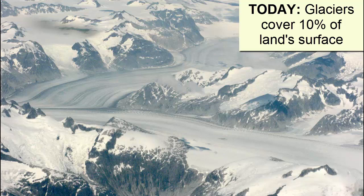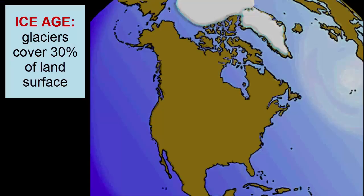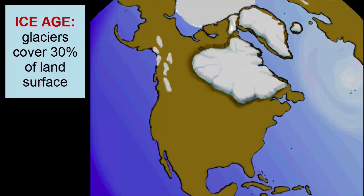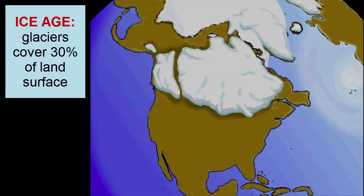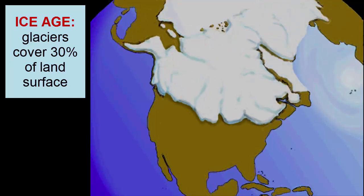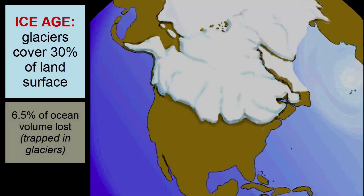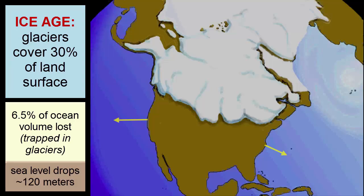Now let's look more closely at the glaciers. Today, glaciers, or land ice, cover 10% of the Earth's land surface. Periodically during Earth's past history, these glaciers have grown up to three times larger to cover, at their greatest extent, 30% of the planet's land surface during periods we call ice ages. 6.5% of ocean volume is lost during those times and trapped on land as glaciers. This loss of water contributes to about 120 meters of sea-level drop.